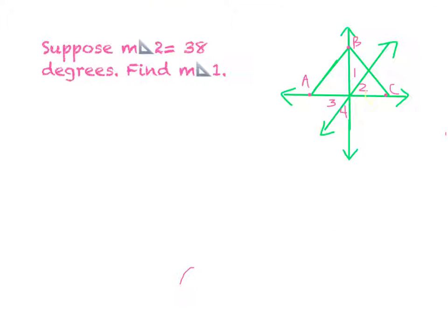So the question today is suppose the measurement of angle 2 equals 38 degrees. Find the measurement of angle 1. So right now we know that the measurement of angle 2 equals 38 degrees. Knowing that it measures 38 degrees,